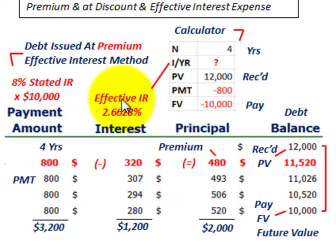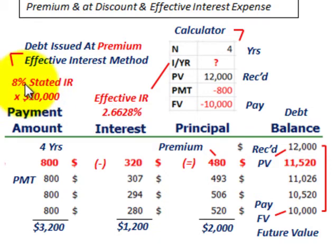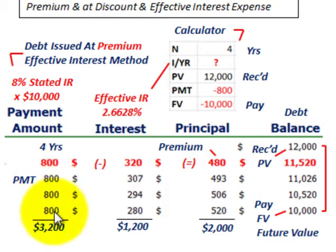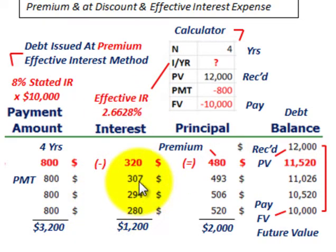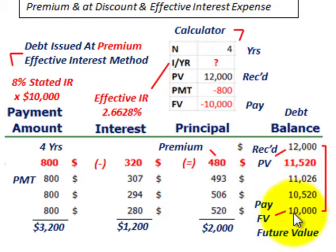We have to calculate the effective interest rate on this loan. First, we start with the cash payment: that 8% interest rate per year times $10,000 gives us a cash payment of $800 each year, so $800 for each of the next four years, totaling $3,200. Now we have to determine the effective interest rate — we're paying 8% in cash, but we need to determine the effective rate to amortize this loan from $12,000 down to $10,000 using a financial calculator.